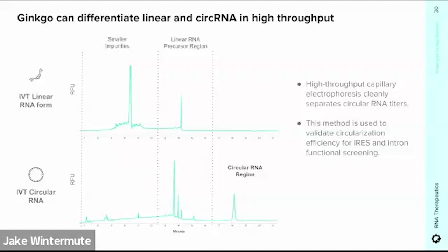At Ginkgo we're developing much better methods to identify circular RNA. We use capillary electrophoresis to characterize our RNA molecules in production. In the top electropherogram we can locate where the linear species are from an IVT reaction containing a mutated intron that will not generate circular RNA. In the lower electropherogram, around minute 18, there is a significant peak corresponding to the circular population. Not only can we clearly distinguish circular from linear RNA forms, but it also gives us a quantitative approach to finding the degree of circularization — and because this is a high-throughput method, it will accelerate our search for optimized internal IRESes for the large libraries we're generating.